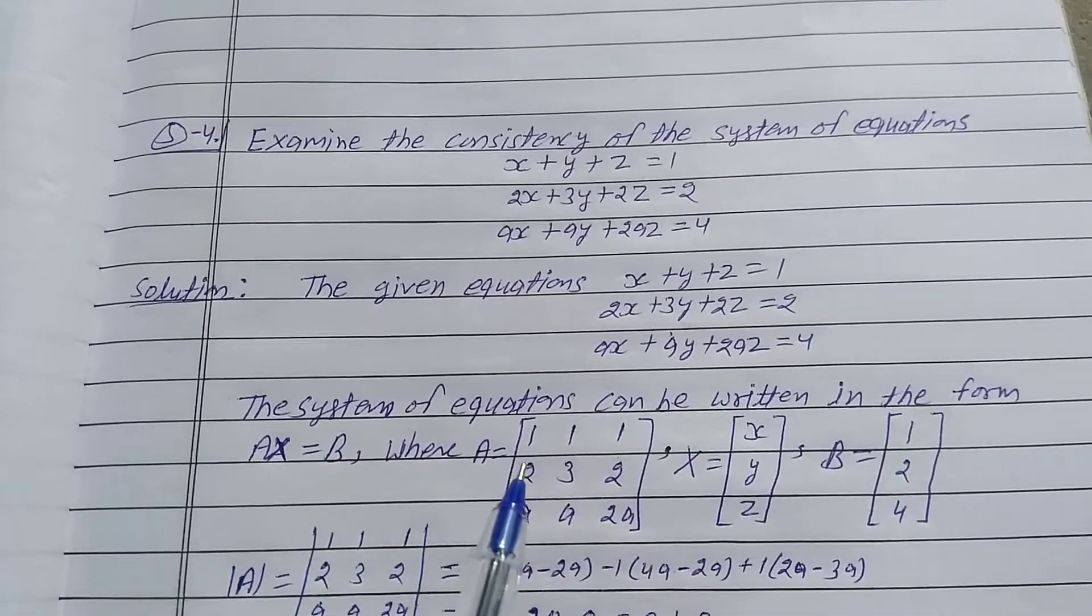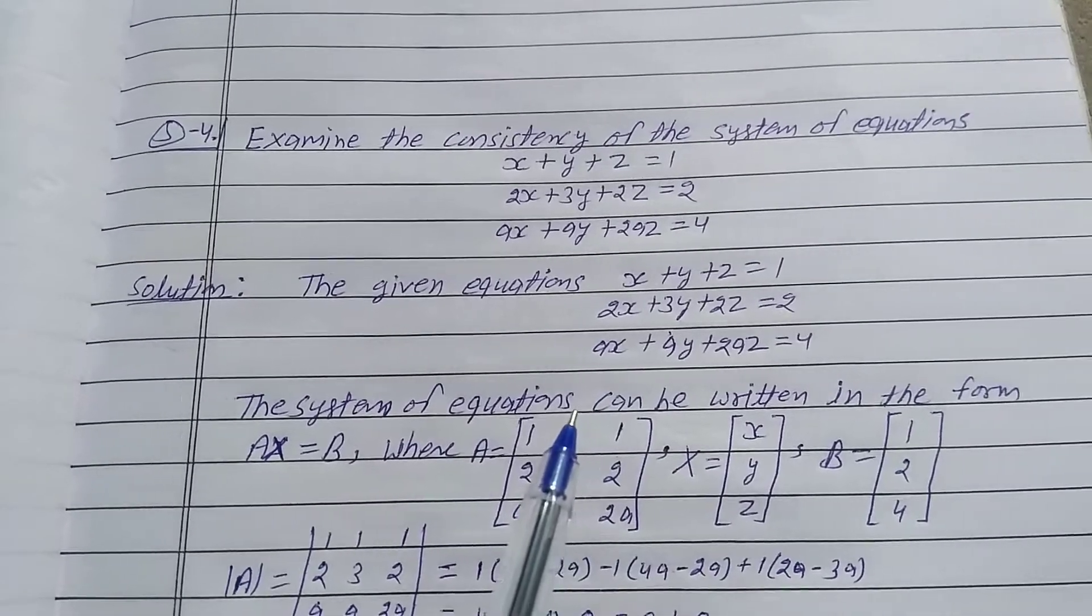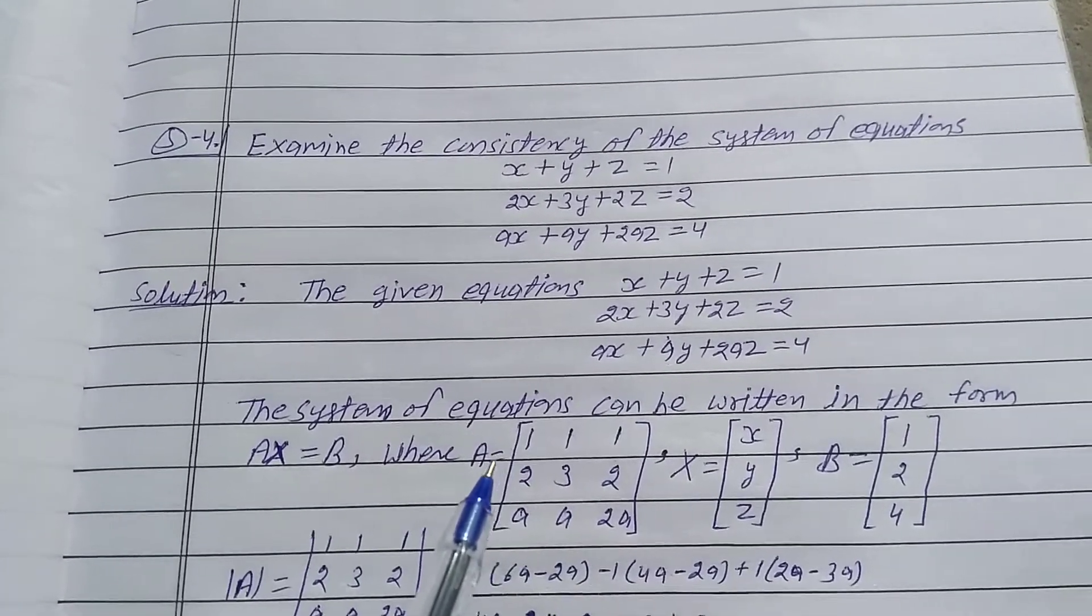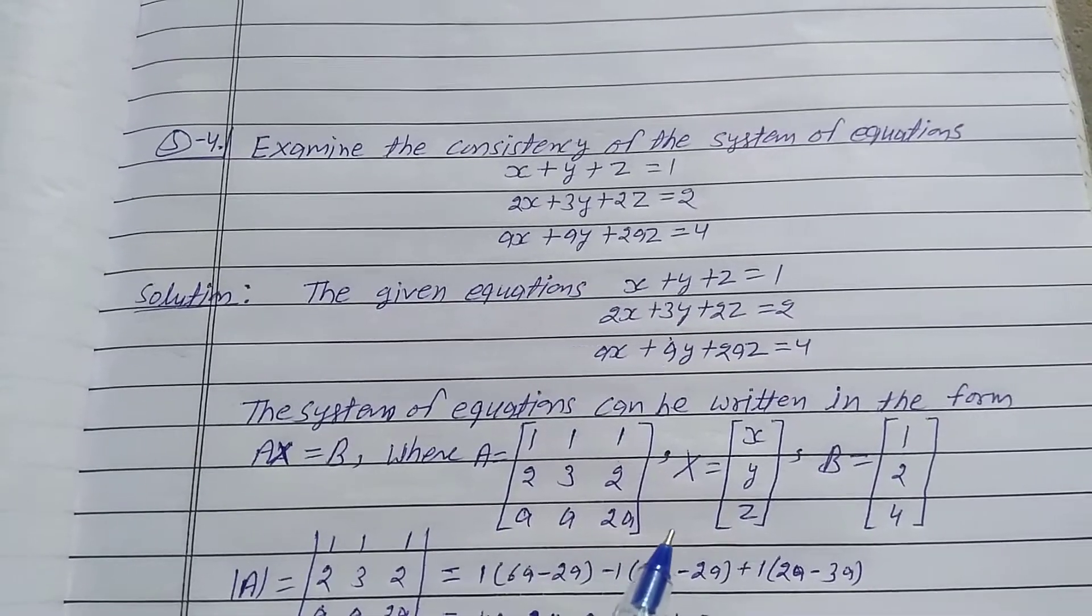Where A is the coefficient matrix of x, y, and z. The matrix A is equal to the matrix of 1, 1, 1; 2, 3, 2; a, a, 2a.